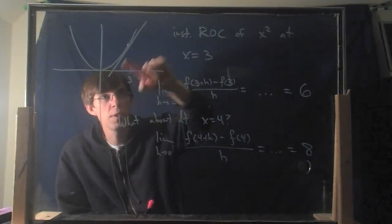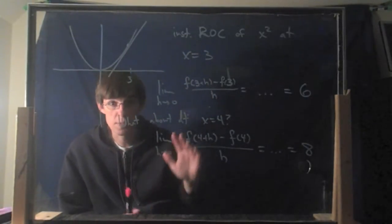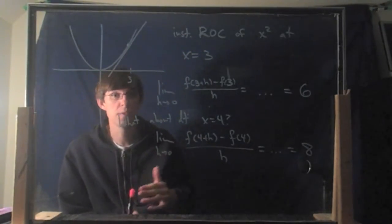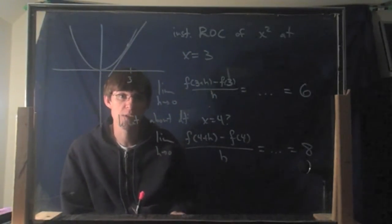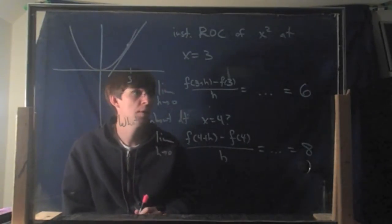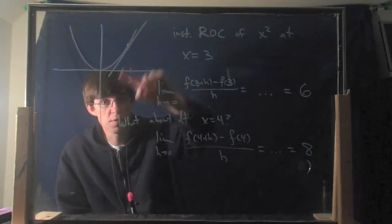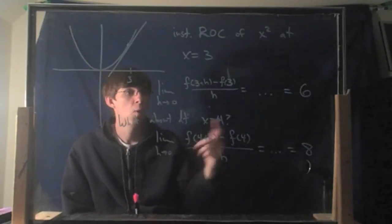At the point x = 3, the slope — the instantaneous rate of change is the same as the slope of the graph — is 6 here.